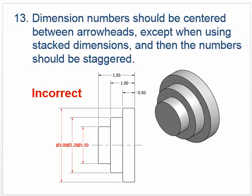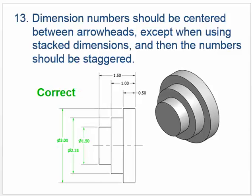Dimension numbers should be centered between the arrowheads, except when using stacked dimensions — then the numbers should be staggered. Shown here, having them all in a straight line makes them hard to read, and that's why we avoid it. Staggering them is the better approach, and here's an example where they're not centered but it's much easier to read.